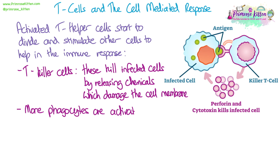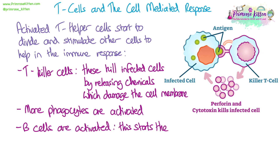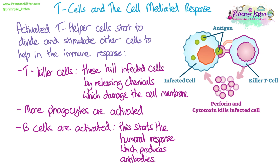More phagocytes are also activated and stimulated to start dividing, so there will be more phagocytes roaming around in the blood and tissue fluid. The activated T helper cells are also going to activate B cells, starting the next stage of the immune response known as the humoral immune response — the part where we start creating antibodies against this pathogen.